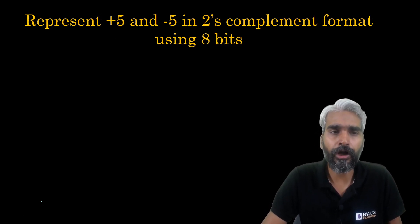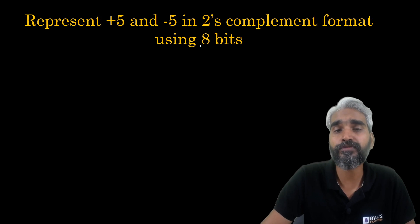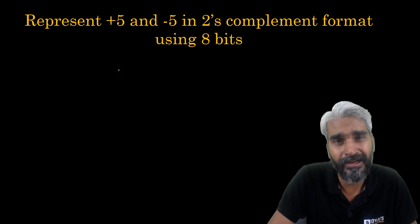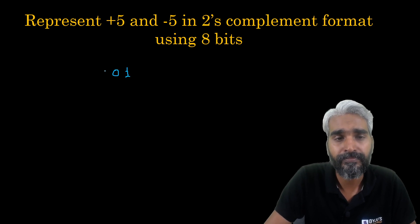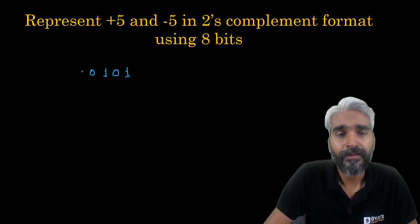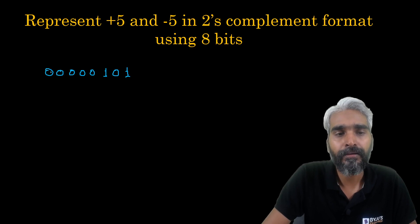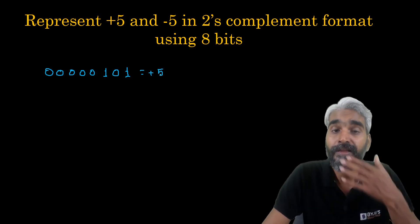First, let's understand the basics of two's complement. How do we represent plus five using eight bits? A positive number in two's complement format can be represented directly. The remaining most significant bit will be zero because it is a positive number, so this is plus five.